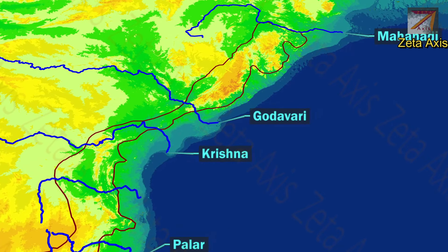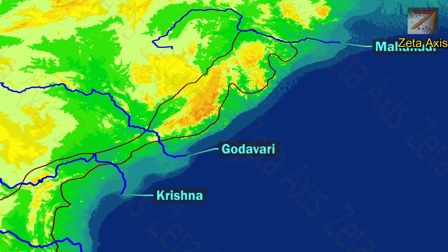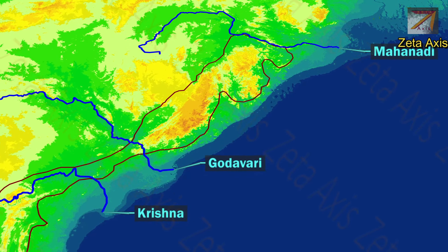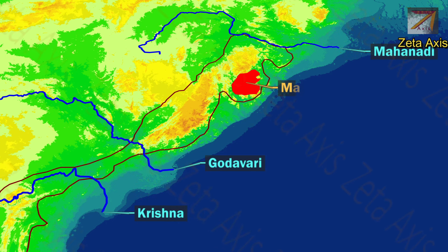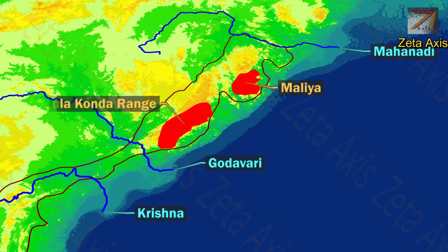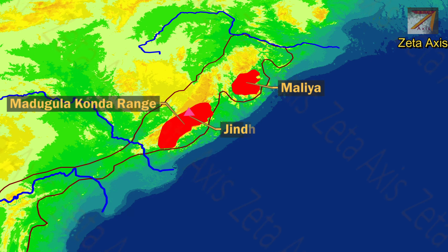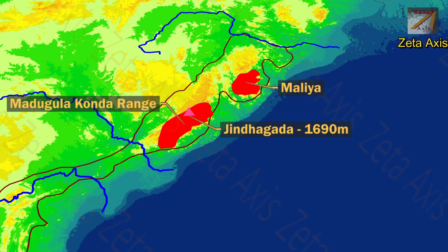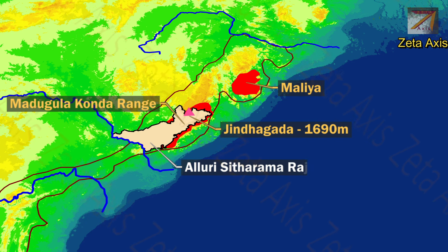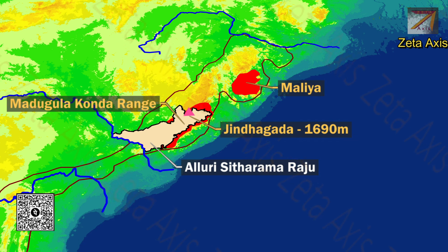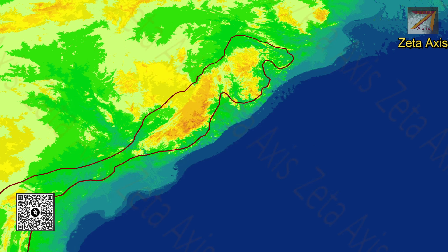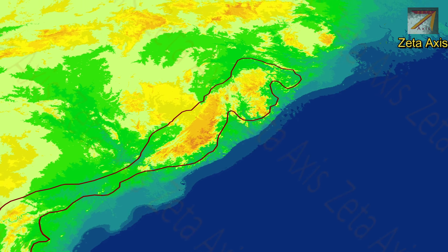The Eastern Ghats show true mountain character only in the northern portion, between Mahanadi and Godavari, where the Eastern Ghats comprise the Malia mountain range and the Madugula Konda mountain range. Jindagada Peak, which is 1690 meters high, is located in Alluri Sitarama Raju district of Andhra Pradesh and is the highest peak of the Eastern Ghats. Now let's see the sub-ranges of the Eastern Ghats.